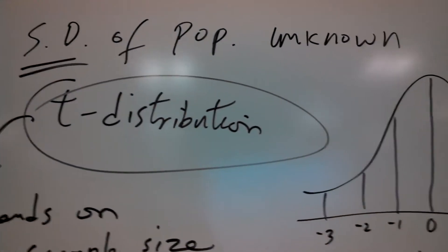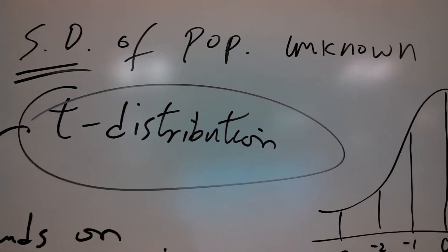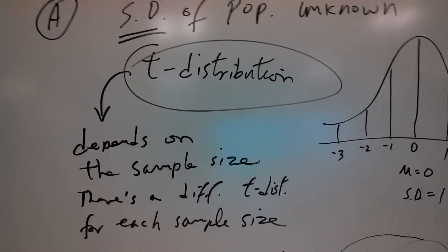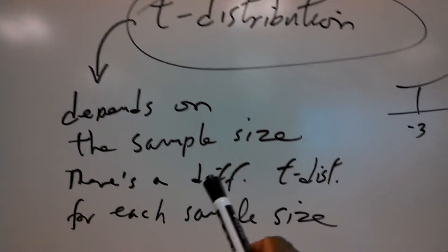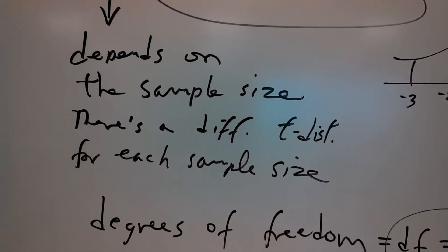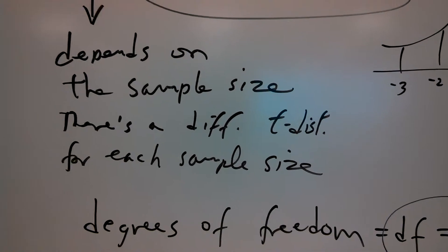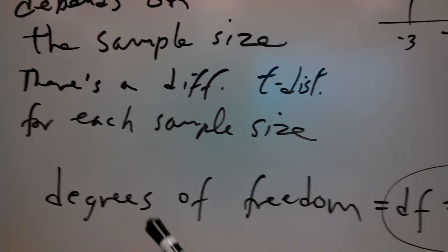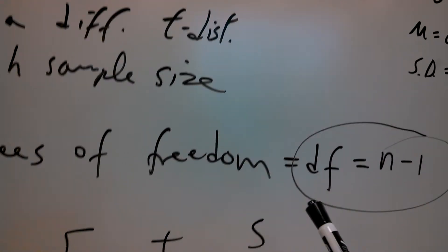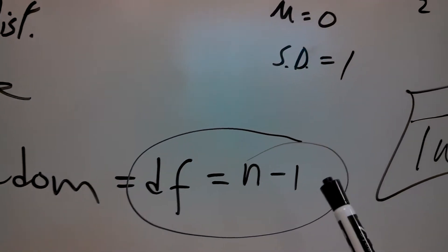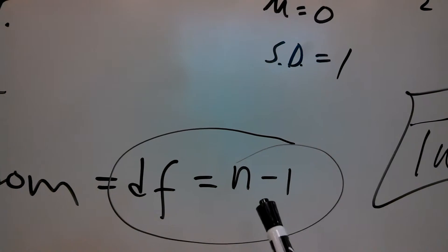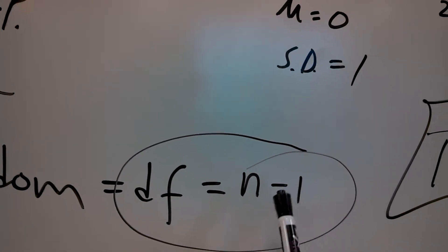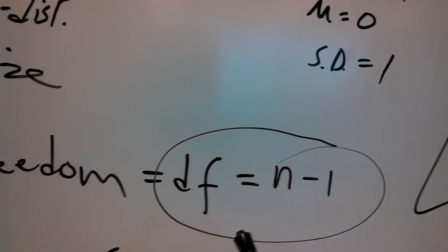If the population standard deviation is not known, then you have to use a T distribution in order to do your estimate. The T distribution depends on the size of the sample, so there is a different T distribution for each sample size. For the measure of sample size, we use what we call the degrees of freedom, which is equal to N minus one. DF is short for degrees of freedom.